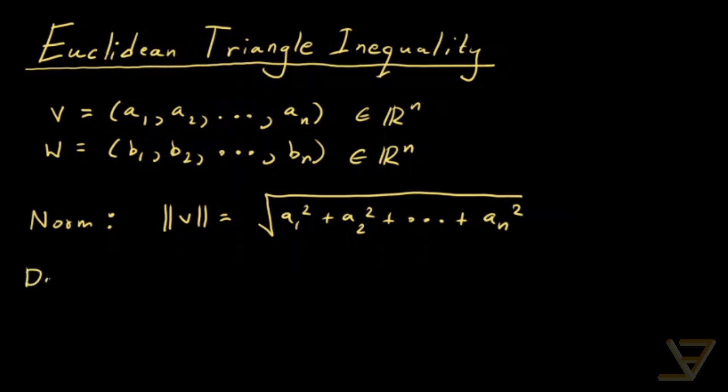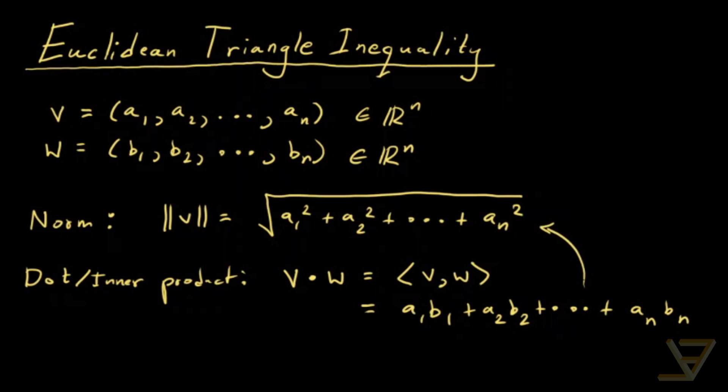Secondly, we need what's called the dot or inner product. This is a binary operation, so we input two vectors into it. v dot w, which is the same as ⟨v, w⟩, equals a₁b₁ + a₂b₂ + ... + aₙbₙ. There is a link between these two that I'll mention in just a second.